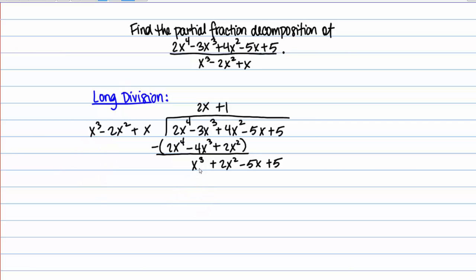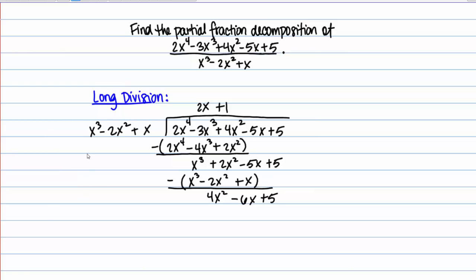Now I take that term I just found — the 1 — and multiply it by the expression x cubed minus 2x squared plus x, which gives me x cubed minus 2x squared plus x. Subtracting that entire quantity: x cubed minus x cubed goes away. Then 2x squared minus negative 2x squared gives 4x squared, and then minus 6x plus 5. Now I'm actually done with the long division part because x cubed is not going to go into x squared — x cubed has a higher degree. So 4x squared minus 6x plus 5 is my remainder.